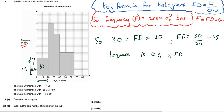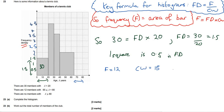We can now fill in the rest of this scale. We're told to complete the histogram as question 1. We've completed the frequency density scale. We're told there are 12 members with 65 less than or equal to A less than 80, so that's going to be a bar from 65 to 80. The frequency is 12 and the class width is 15. So the frequency density equals 12 divided by 15, which is 4 fifths, which is 0.8.